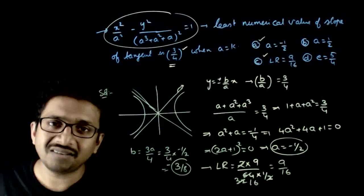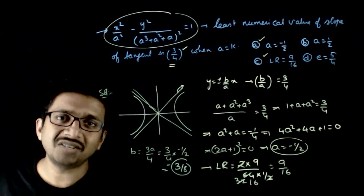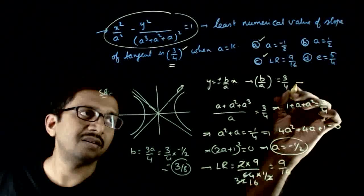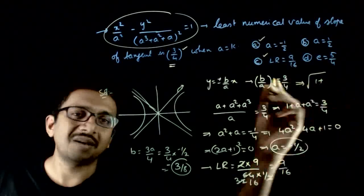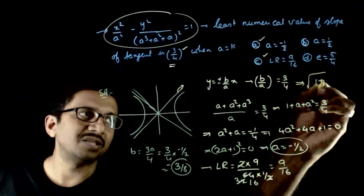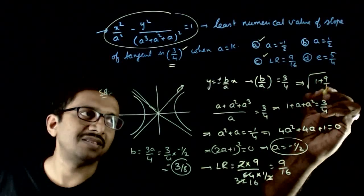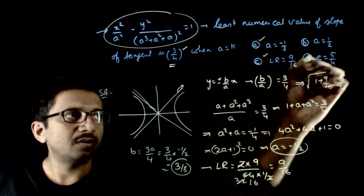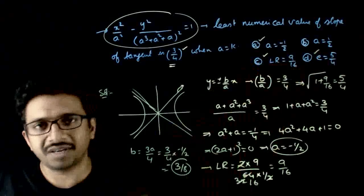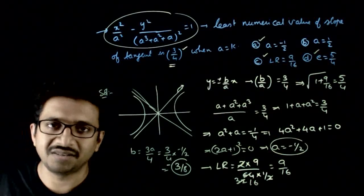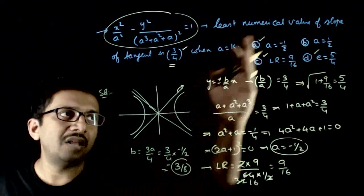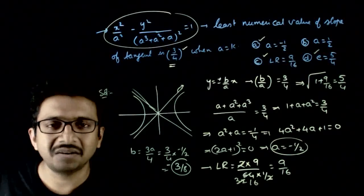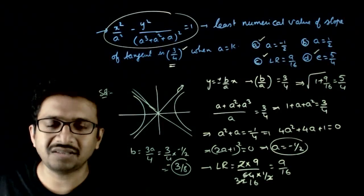And what is the eccentricity? The eccentricity of the hyperbola is √(1 + b²/a²) = √(1 + 9/16) = 5/4. So option D is also correct. So options A, C, and D are all correct for this question.